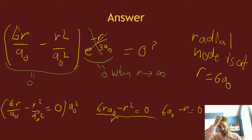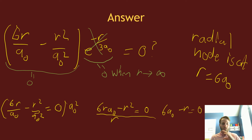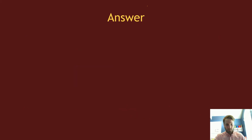So the radial node is at r = 6a₀. I'll also note that I'm posting these videos working out the solutions, but I'll also have the typed-up solutions that I normally have in the lecture slides posted online as well, so if it's difficult seeing what I'm writing here, you can look those up.